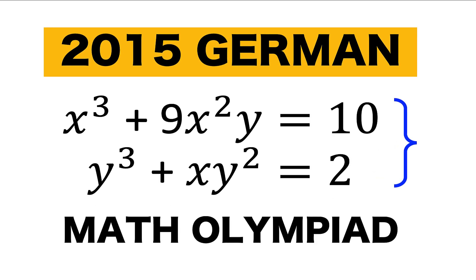Hi everyone, here is our math problem for today. We are given two equations: x cubed plus 9x squared y equals 10, and y cubed plus x y squared equals 2. Solve this system of equations in the set of real numbers. You can pause the video and see if you can solve this math Olympiad problem.